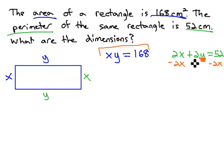Subtract 2x from both sides, working on getting the y alone. 2y equals negative 2x plus 52, and then get y alone by dividing both sides by 2. y is equal to negative x plus 26.